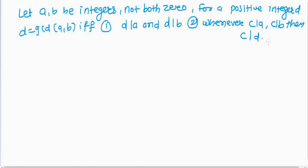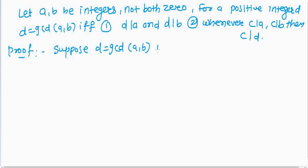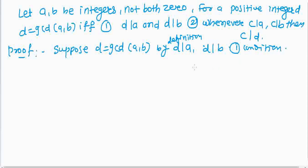Let us prove this. First, suppose d equals gcd(a,b). Then by definition, d is a divisor of a and d is a divisor of b. So the first condition is satisfied.